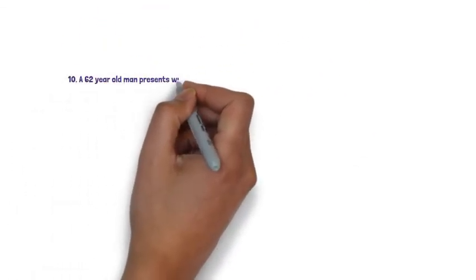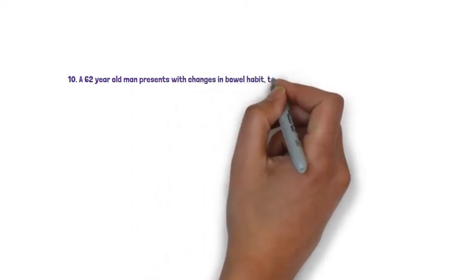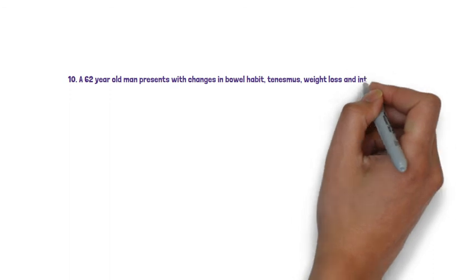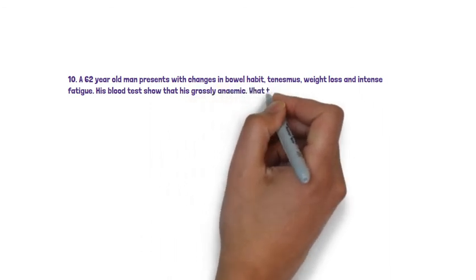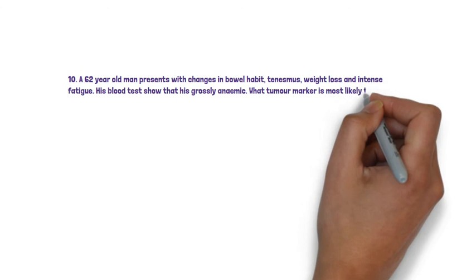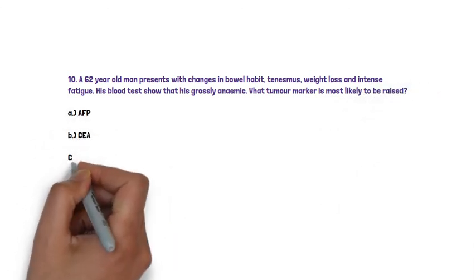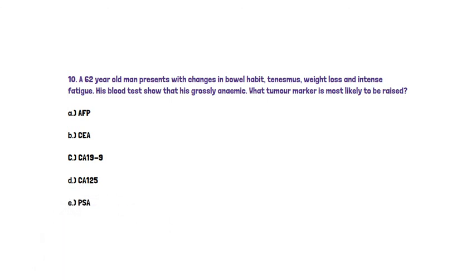Our last question — question 10 — concerns a 62-year-old man who presents with changes in bowel habit, tenesmus, weight loss and intense fatigue. His blood tests show that he is grossly anaemic. What tumour marker is most likely to be raised? Options: A. AFP, B. CEA, C. CA19-9, D. CA125, E. PSA.